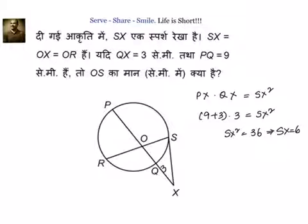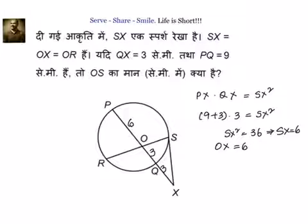Once we know SX equal to 6, we also know that OX equal to 6. If OX equal to 6, then OQ will be 3, because OQ plus QX equals OX. We also know PQ equal to 9, that means PO plus OQ is 9, so PO equal to 6. We also know OX is equal to 6.